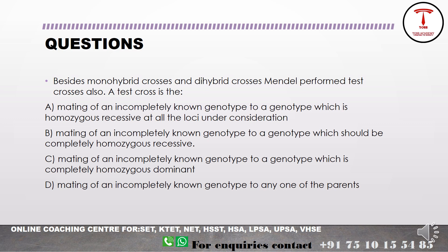The next question is on genetics: 'Besides monohybrid and dihybrid crosses, Mendel performed test crosses also.' A test cross is a mating of an individual of incompletely known genotype with one that is homozygous recessive at all the loci under consideration. So the correct option is option A.